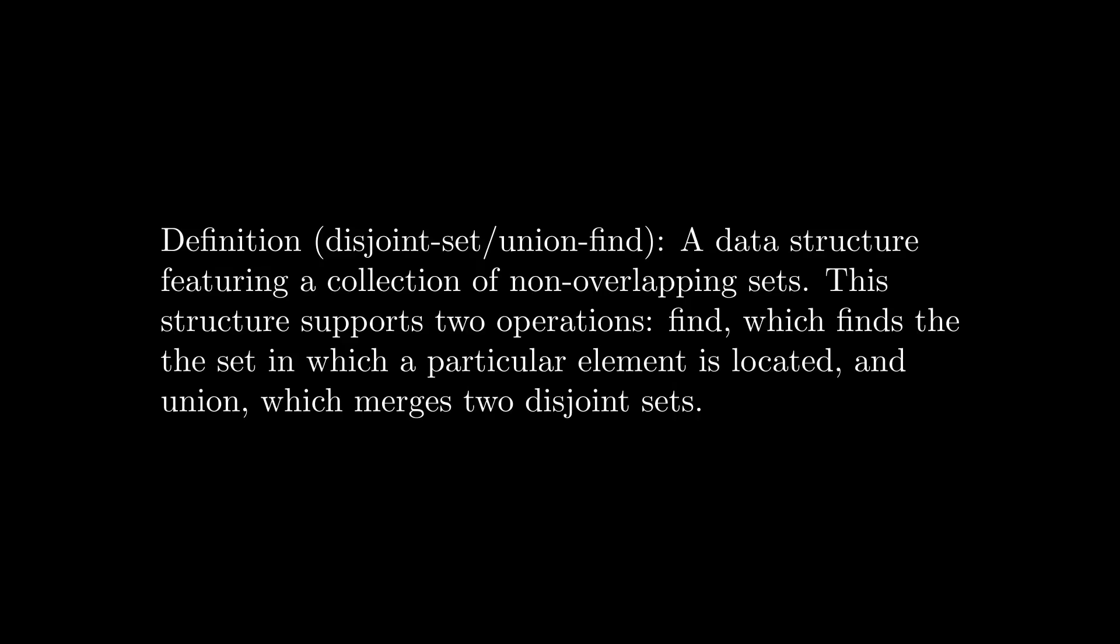As the name implies, a disjoint set data structure stores a collection of non-overlapping sets. This structure supports two operations: find, which determines which set contains the element we want to find, and union, which merges two subsets together.